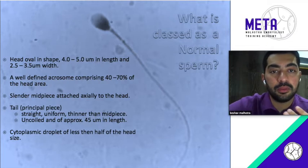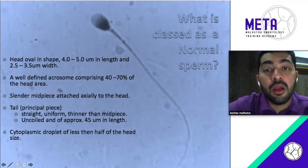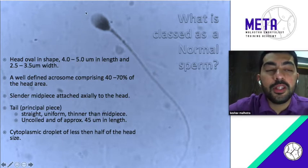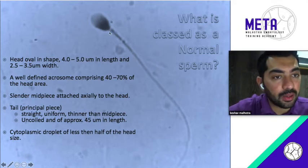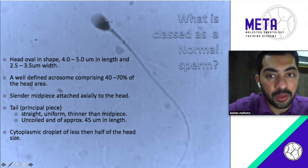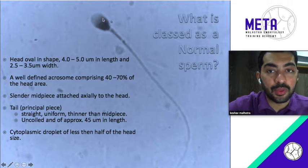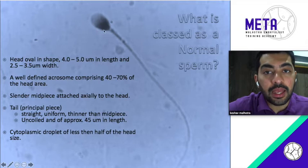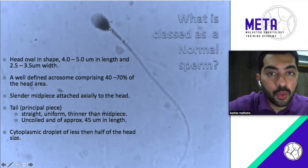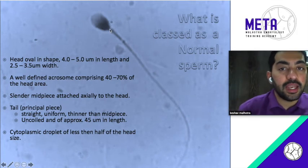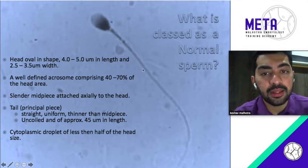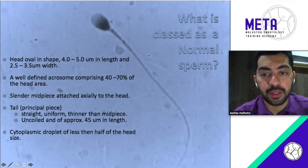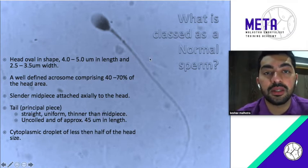Before we head into the details of sperm morphology, let's first understand what a basic normal sperm looks like. A normal sperm is oval in shape — the head length is about four to five microns, the width is about two-point-five to three-point-five microns. It should have a well-defined acrosome — the lighter area you see here is the acrosome. The tail should be attached axially to the head, right in the center. We should have a nice, well-defined mid-piece, and then a tail which is about 45 to 50 microns in length, thinner than the mid-piece.